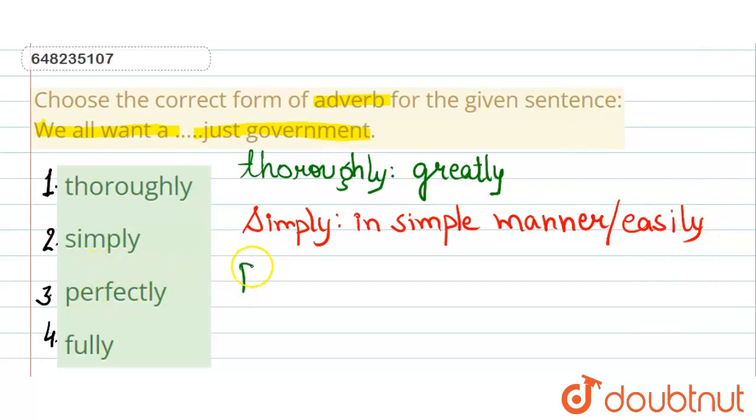Then the third one is perfectly. Perfectly means excellently. Excellent means this is a way that you can't do better with it. That's the best way that we will say perfectly.